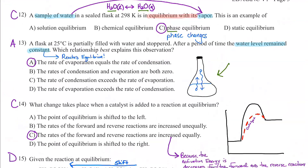Number thirteen: a flask is partially filled with water and stoppered. After a period of time, the water level remains constant. This line doesn't change because the rate of evaporation equals the rate of condensation — that's another example of equilibrium. Things stay constant. That's why the answer is A.